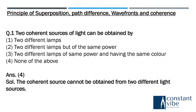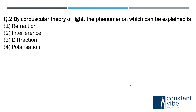Let us see the second question. By corpuscular theory of light, the phenomenon which can be explained is diffraction. In light theory, there are two basic theories — one is corpuscular and the other is Huygens theory. By the corpuscular theory, the phenomenon explained is diffraction.